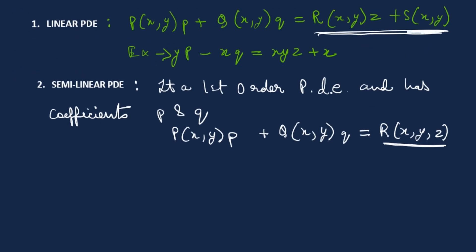An example of a semi-linear PDE would be: e^x · p minus y·x · q = x·z². That illustrates the semi-linear form.